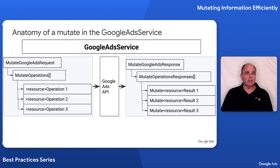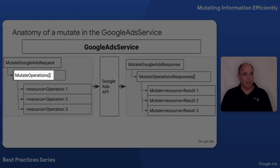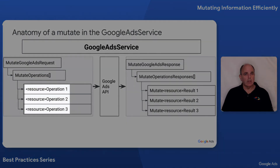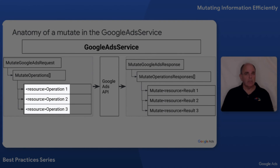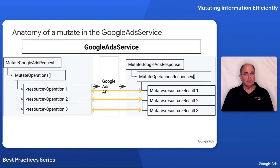The organization of the Google Ads service looks similar to the per-service request, but there are a couple of subtle differences. You still create a request, and it still consists of multiple operations. In each operation, you specify the resource name and the action. For example, create campaign, update ad, and remove ad group are all examples of different operations that can be specified in a single Google Ads Service Mutate request. Similarly, the response is a set that also corresponds one-to-one with your operations.